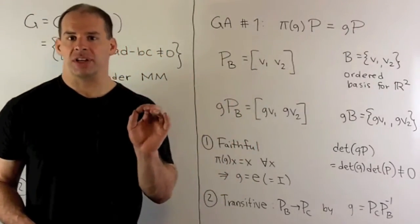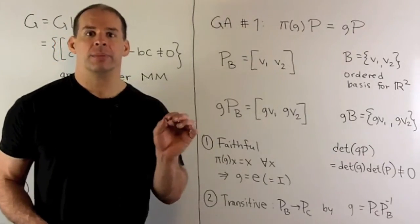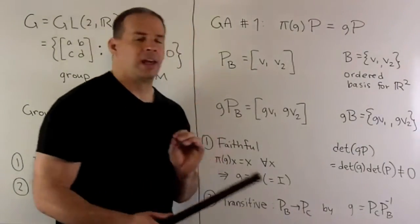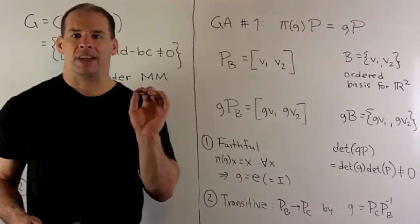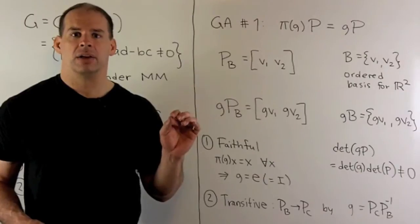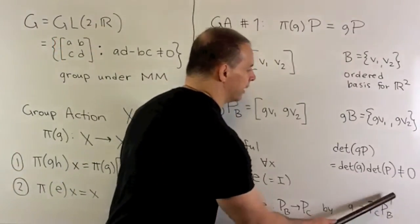Then, for transitive, transitive is just we can get there from here. So, if you give me two matrices, P_B and P_C, I can find another element in GL(2,R). If I multiply on the left, that'll get me from P_B to P_C. In this case, that matrix is going to be P_C P_B inverse.